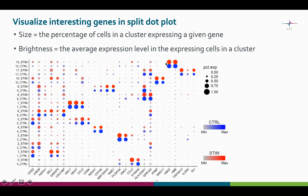Here you can see, for example, that these two genes seem to be excellent conserved cluster markers for cluster number 12. Here we also see some genes that seem to behave differently across the different samples.